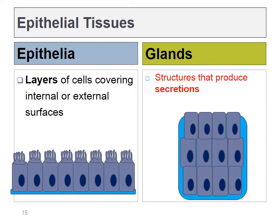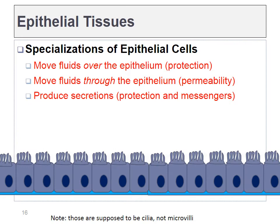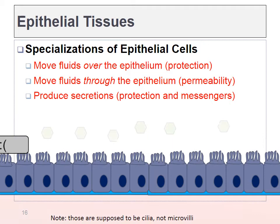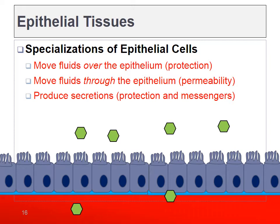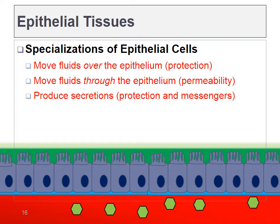The basic type of epithelia are the ones that form layers; there are also glandular epithelia. Most epithelial tissues form a barrier and can do one of three things: move fluids over the epithelium (such as moving mucus up and out of the respiratory tract), move materials through the barrier (such as absorbing nutrients in the digestive tract), or make secretions — both the respiratory and digestive tracts make mucus for protection.